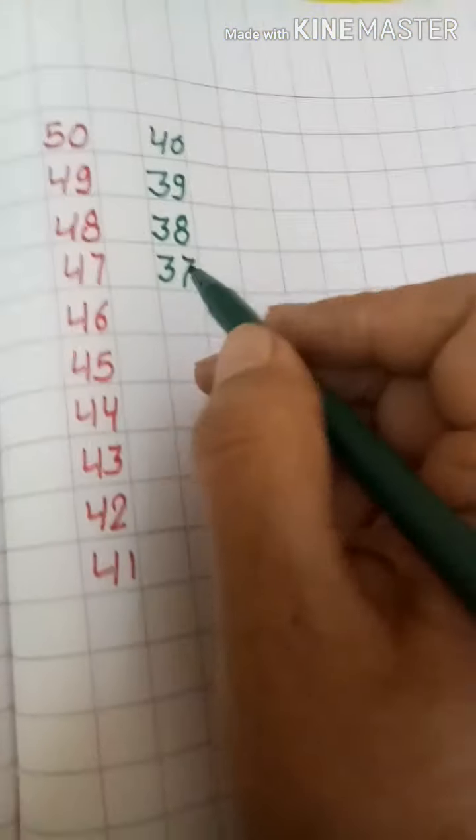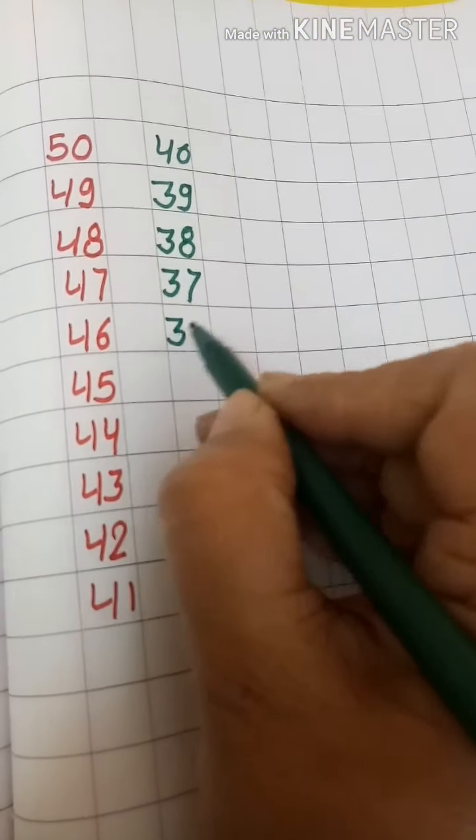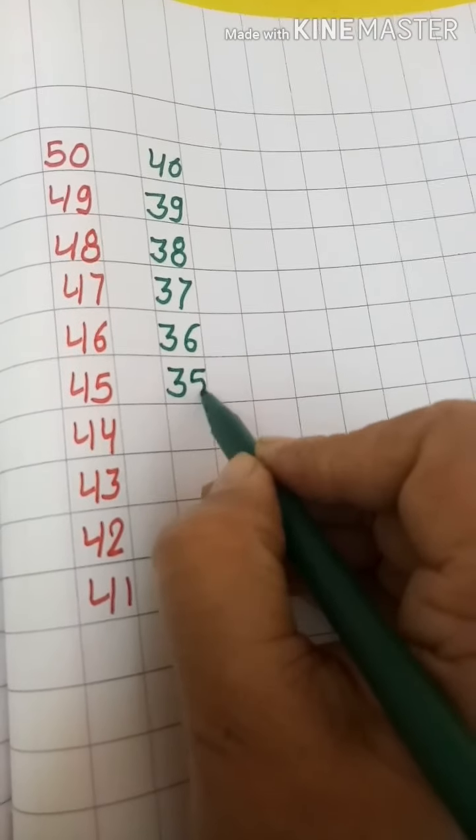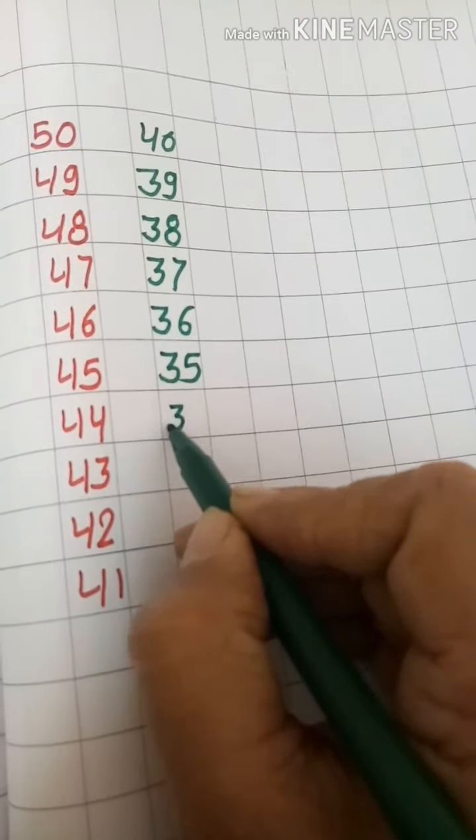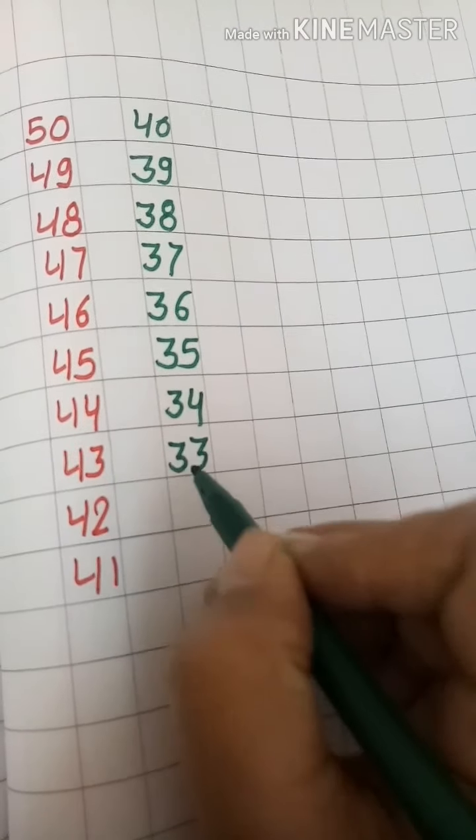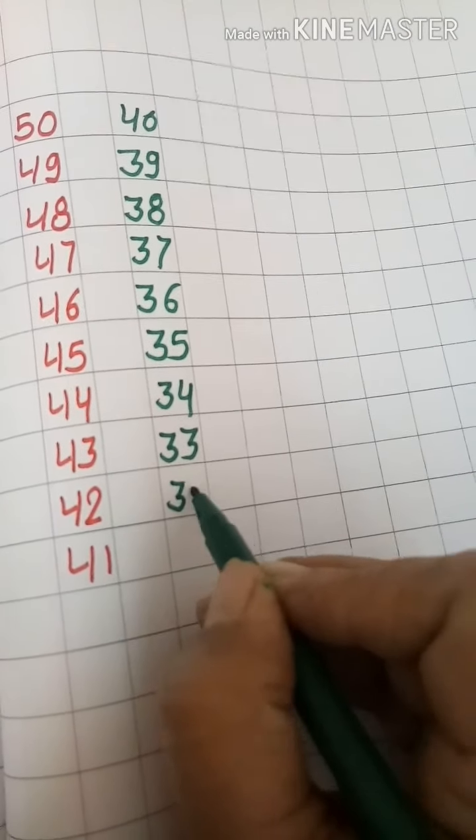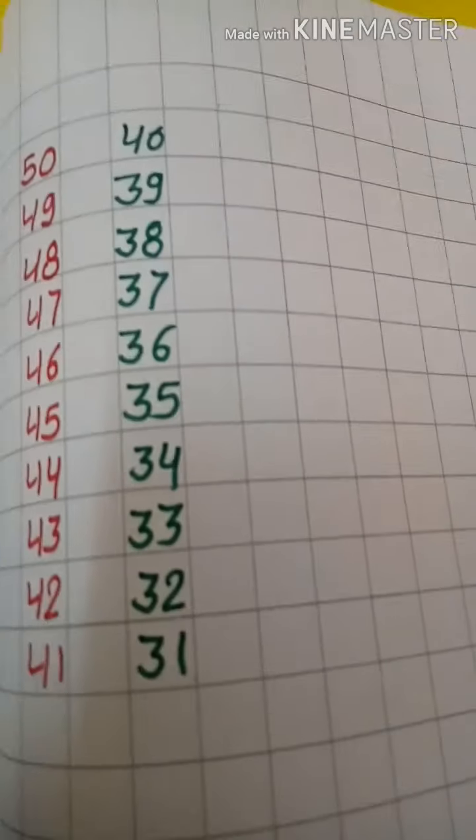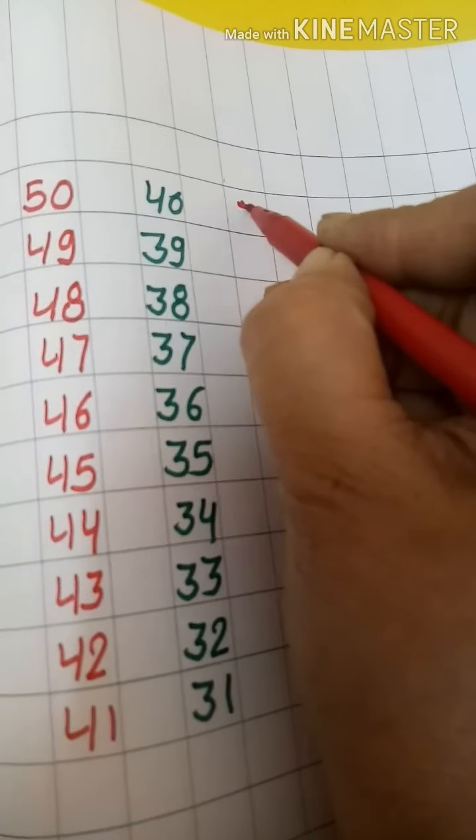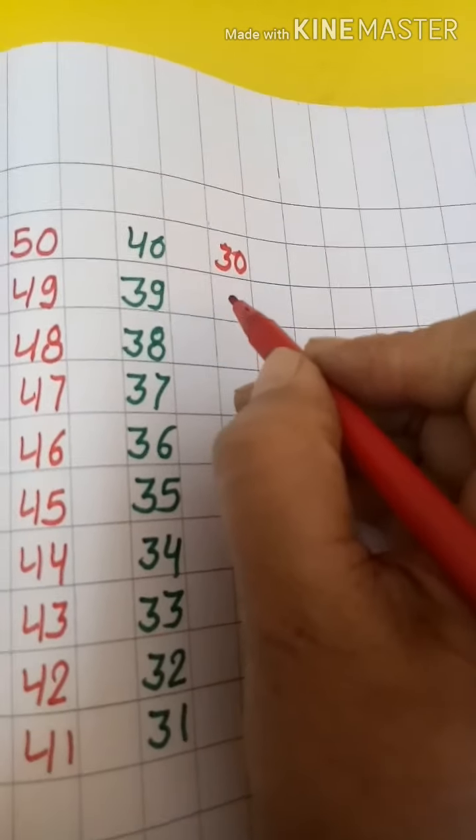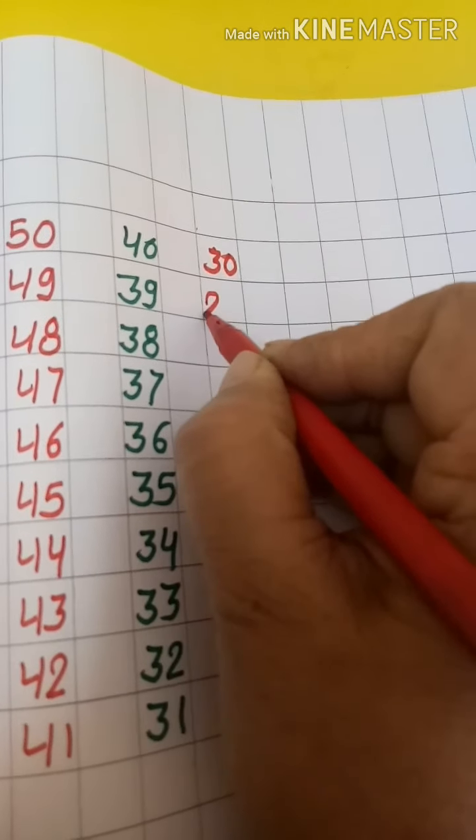37, 36, 35, 34, 33, 32, 31. Next है 30. 30 के पहले कुन सा नमबर आता है? 29 की लाइन आती है न?